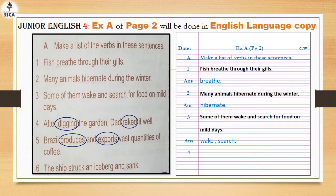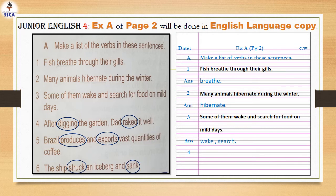After writing question number 5 and its answer, write down question number 6: The ship struck an iceberg and sank. Struck means takra jaana ya lagna, iceberg means barf ki chattaan, and sank means doob jaana. The verbs in this sentence are: struck and sank. Write down these answers in your copy.